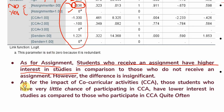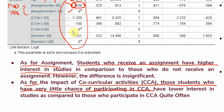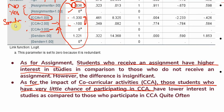For co-curricular activities — an ordinal variable — students who have very few co-curricular activities show a negative sign, and the same is true for the 'sometimes' category. To interpret this, you compare these categories to the third category, which is the reference. Interest in studies is lower for those with low or sometimes participation in co-curricular activities compared to those with high participation. Interest in studies is higher when there are high co-curricular activities, because the lower categories carry a negative sign.